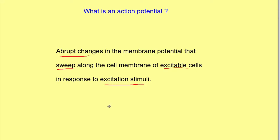There are certain key terms in this definition. One is there is abrupt change — a sudden change in the membrane potential. Then it sweeps along the cell membrane, so it can travel along the cell membrane. Once an action potential is generated it travels along the entire cell membrane of excitable cells. Excitable cells are those which respond to any stimulus, like nerve, skeletal muscles, smooth muscle.